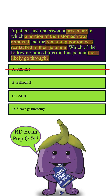A Bilroth 2 procedure, which is also known as a gastrojejunostomy, involves attaching the remaining portion of the stomach to the jejunum. This is very much what we're looking for. Let's bank this answer and go on to the other answers just for good practice.